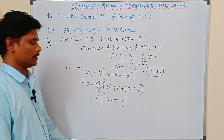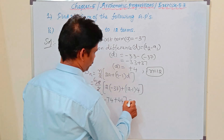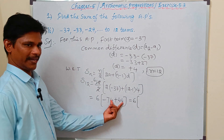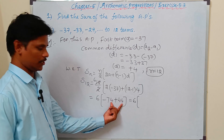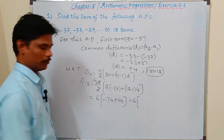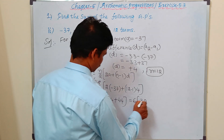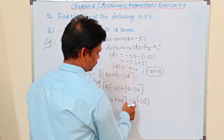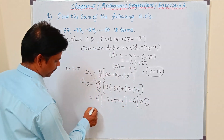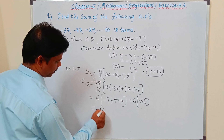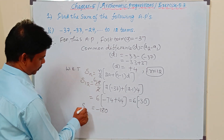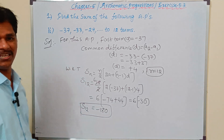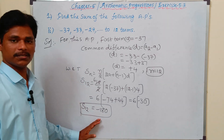Simplifying: −74 + 44 = −30. So 6 × (−30) = −180. Therefore S12, the sum of 12 terms of the given series, is −180.